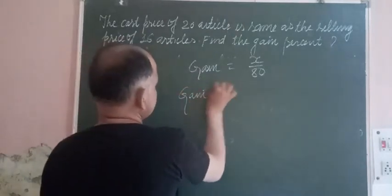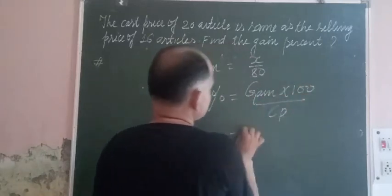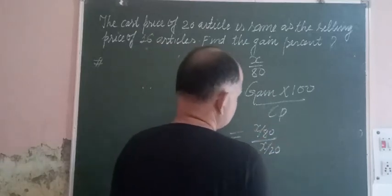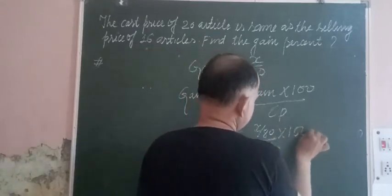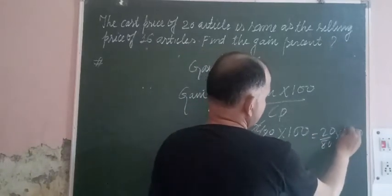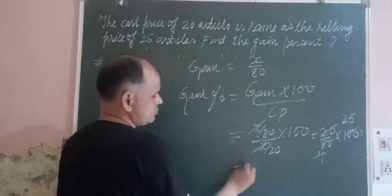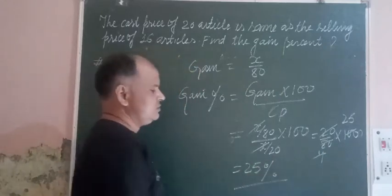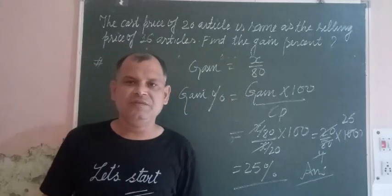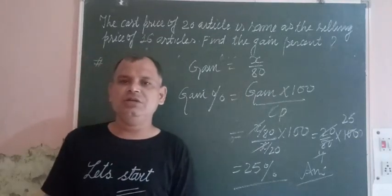Now we find gain percent. Gain percent equals gain into 100 over CP. Gain is x over 80, and CP is x over 20. So we get (x/80) divided by (x/20), multiplied by 100. The x cancels, giving 20 over 80 into 100, which equals 25 percent. This is our answer. In this way we can find the gain percent in such types of problems.